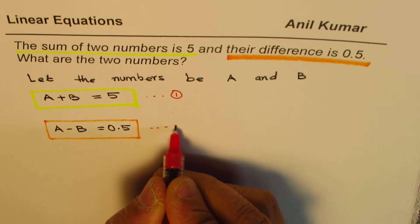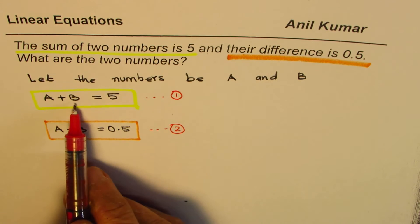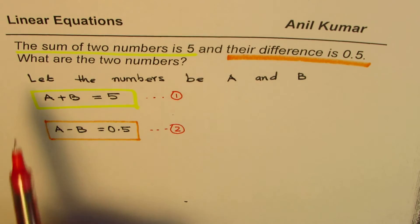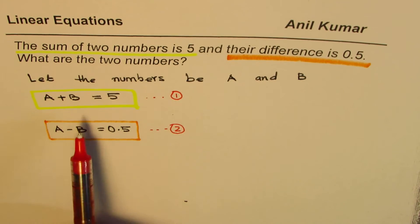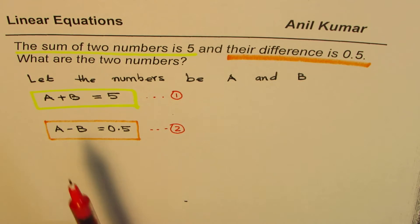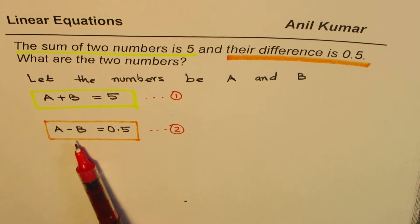So the idea is to understand how to solve such equations. Now we have two different equations: A plus B equals 5, and A minus B equals 0.5. And the question says, what are the two numbers? We want to find value of both A and B. Well, you can write one value in terms of the other, but how do you find, in the first place, one of these values?